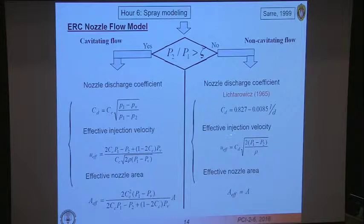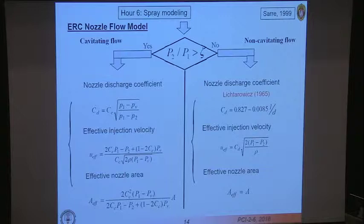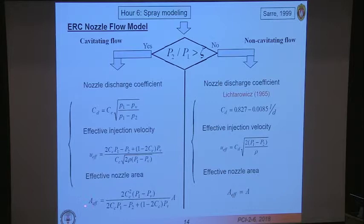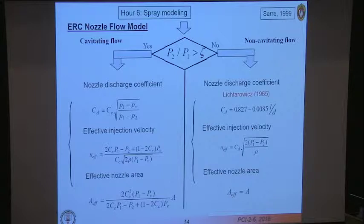For non-cavitating flow, the discharge coefficient is based on the length-to-diameter ratio of the passage, and the effective injection velocity is determined by Bernoulli's equation using the pressure difference and the discharge coefficient. The effective area at the nozzle exit equals the nozzle area. For cavitating flow, the contraction coefficient and vapor pressure both matter — the effective injection velocity and cross-sectional area differ because parts of the nozzle are occupied by vapor. This simple, practical cavitation modeling approach gives at least a starting point.